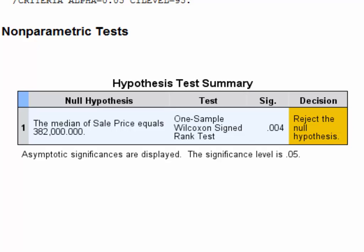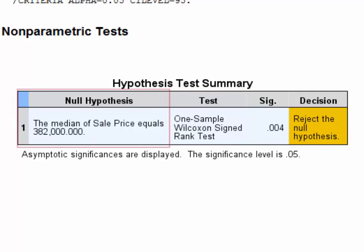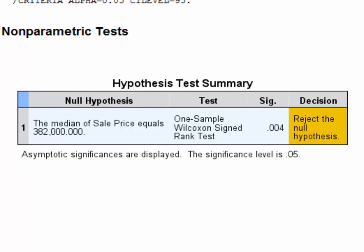Here we can see that a one-sample Wilcoxon signed rank test was run, and the null hypothesis for this test was that the median sale price equals 382,000. We're in a position where we can reject that null hypothesis because the significance level for the test is less than alpha, which has been set at 0.05 by default.